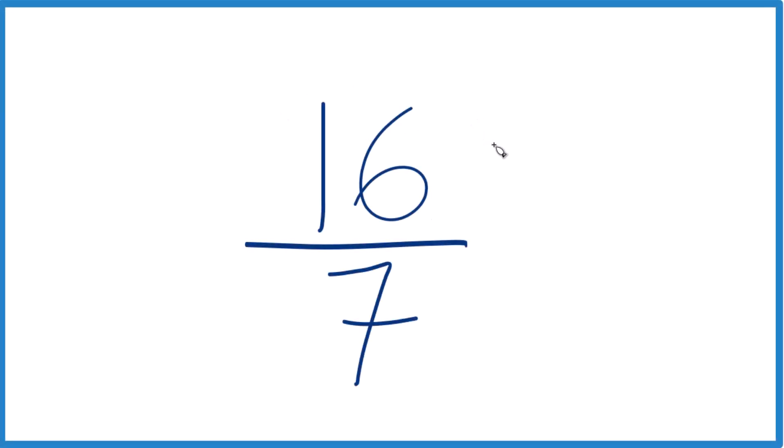So let's see if we can simplify this fraction 16 sevenths and then write it as a mixed number as well. So when we simplify 16 sevenths, we're looking for a number that goes into 16 and 7 evenly, a whole number.